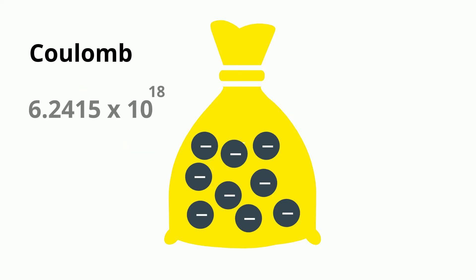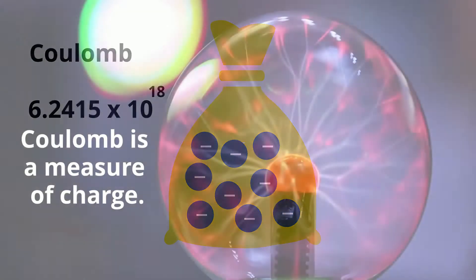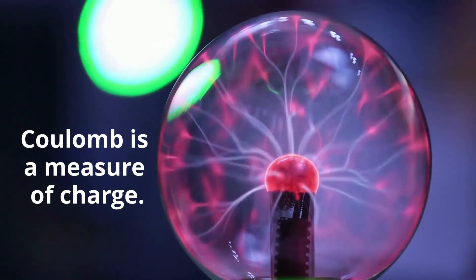It takes 6.2415 times 10 to the 18 electrons to make one coulomb. That's a lot of electrons. Again, a coulomb is a measure of charge.